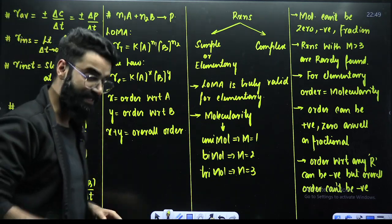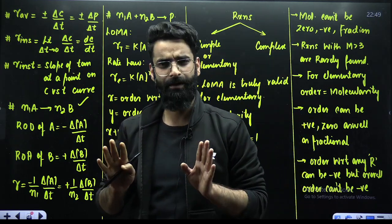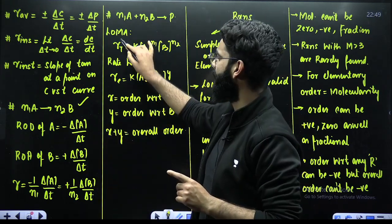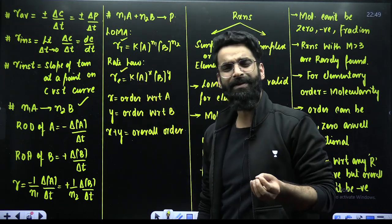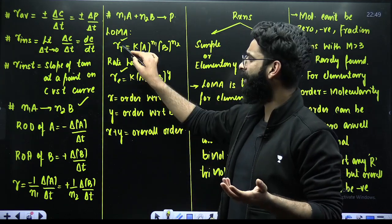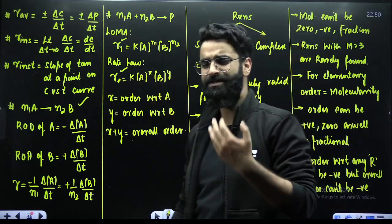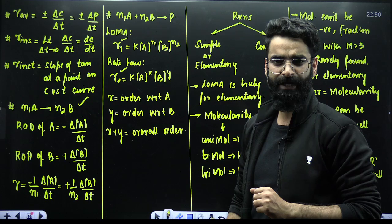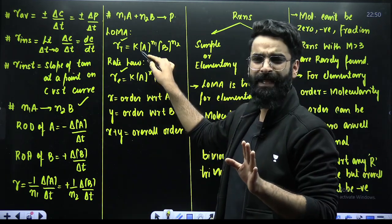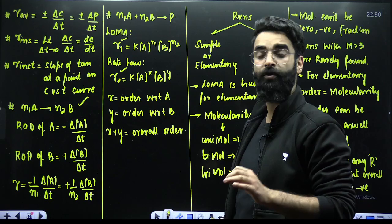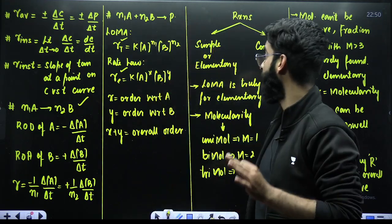We have two ways to calculate rate: one using the law of mass action, giving theoretical rate, and one using rate law, giving experimental rate. For some reactions, theoretical and experimental rates are equal, but for others they are not — meaning X is not always equal to N1, and Y is not always equal to N2. In some reactions X equals N1 and Y equals N2.